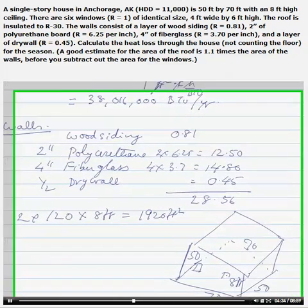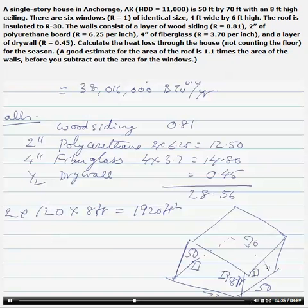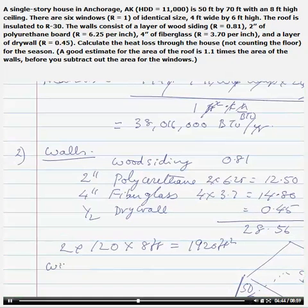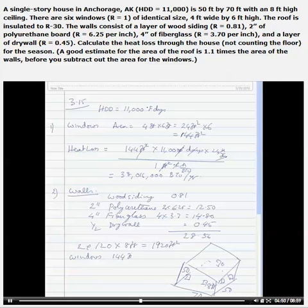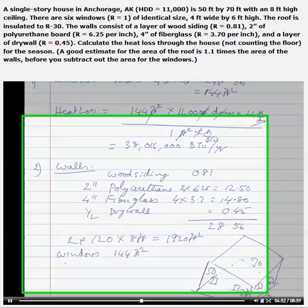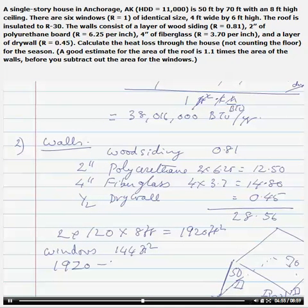Of course, this also has some windows - about six windows as we originally looked at. But at this point we will take this as 1920, and subtracting windows from this - windows is 144 feet squared - so 1920 minus 144 would give us 1776 feet squared.